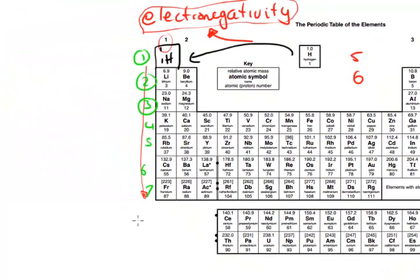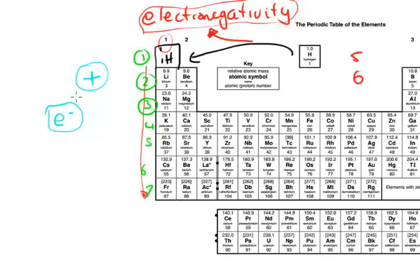The nucleus of an atom of an element is positively charged, and the electrons have a negative charge. As we've heard, opposites attract — and this is no exception. The negatively charged electrons are attracted to the positively charged nuclei. Maybe this is even where 'opposites attract' came from.